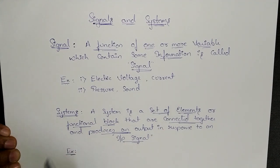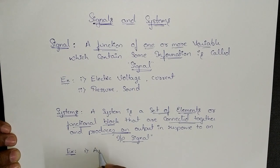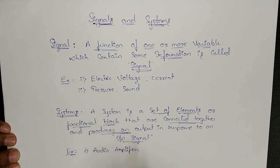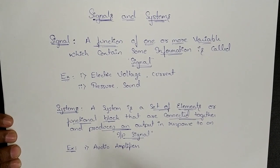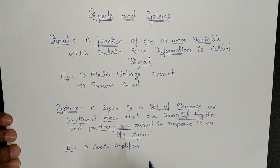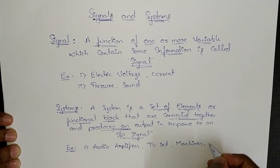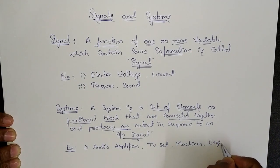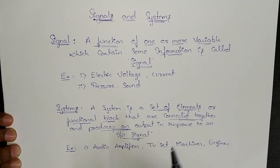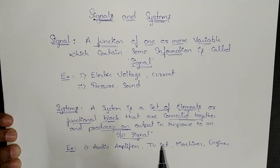Some other examples with respect to systems: we can consider audio amplifiers. Most houses have audio amplifiers now — for your TVs we connect speakers, amplifiers, TV sets, and machines. Engines are also systems. These are all systems which carry a set of elements or functional blocks connected together in a systematic manner to produce some output for a given input.